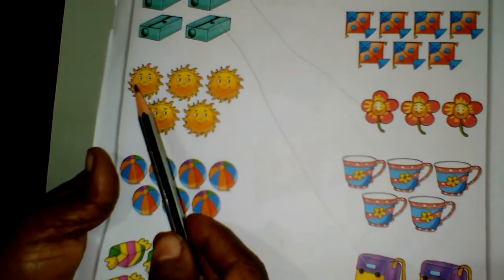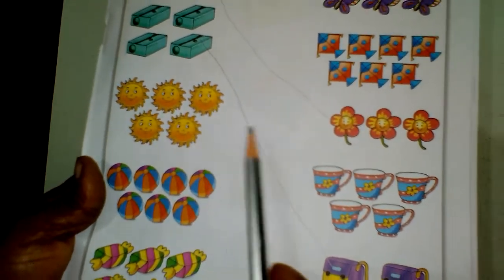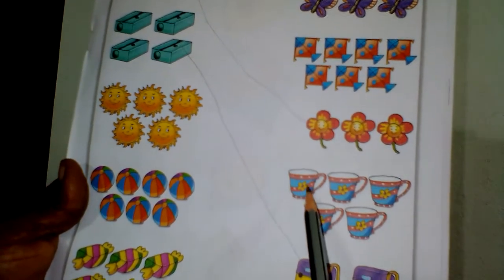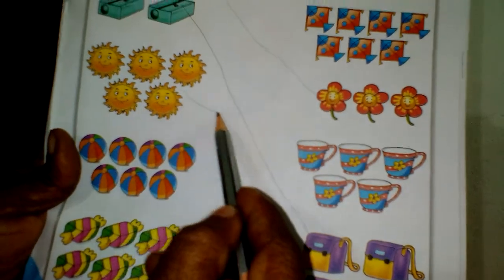Next one. Sun counted. One, two, three, four, five. Five pieces. Where is five pieces? Another cups. One, two, three, four, five. Because draw the line.